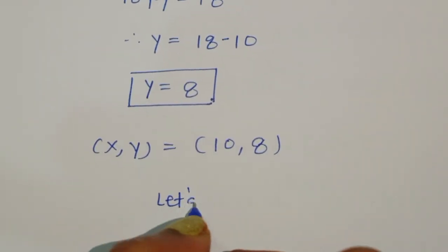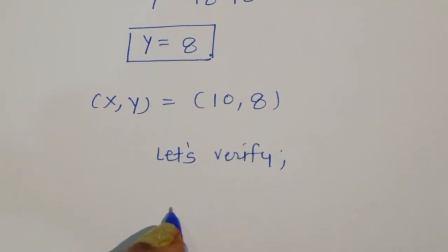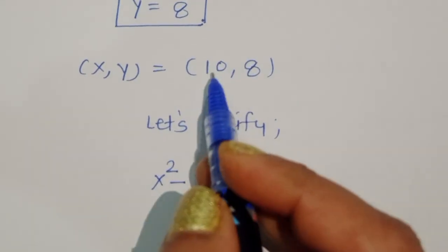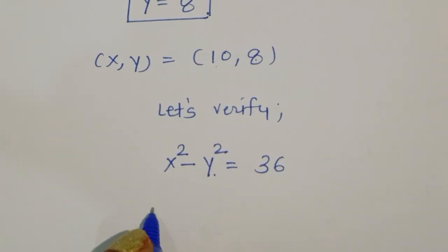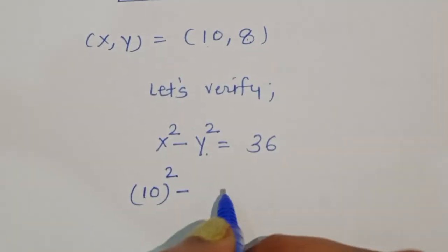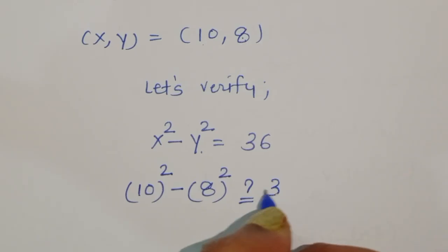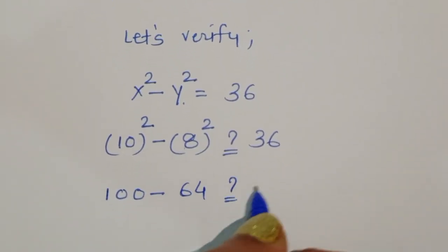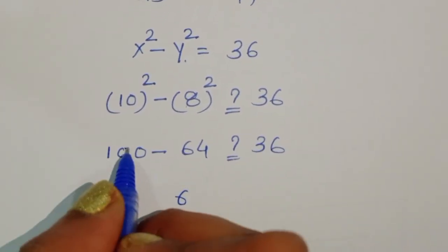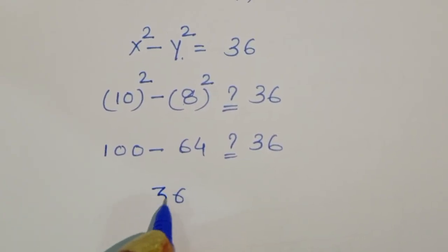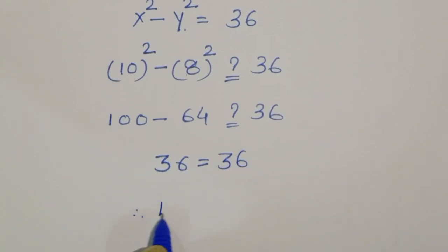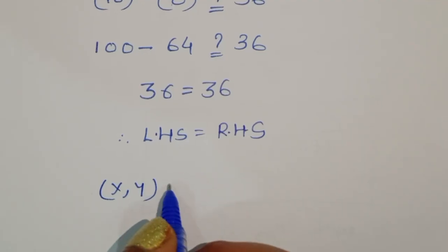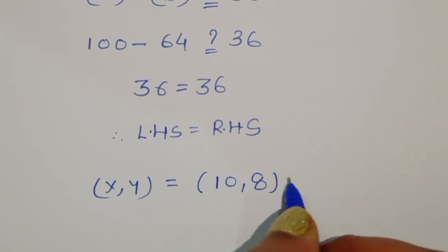Let's verify: substituting x = 10 and y = 8 into x² - y² = 36 gives 10² - 8² = 100 - 64 = 36. So LHS = RHS = 36. Therefore, the values of x and y which belong to the natural numbers are x = 10 and y = 8. This is the correct solution.